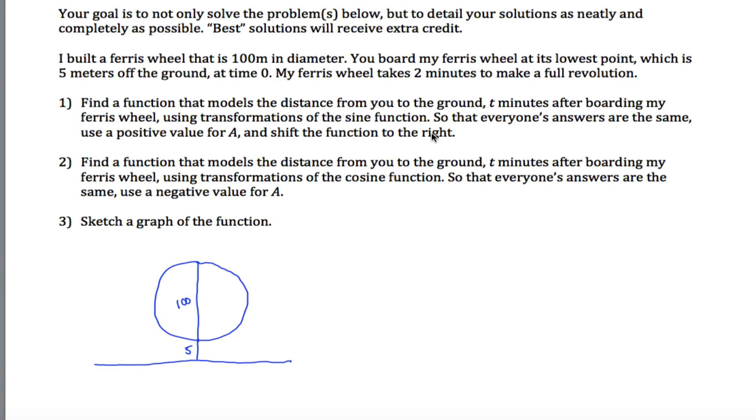And you're asked to do that twice, first using the sine function, then using the cosine function. So let's first do this using sine. So if I'm using the sine function, I have f of t, which is my variable, is A times the sine of B times t plus C plus D. And if I could figure out A, B, C, and D, I'd be done with the problem.